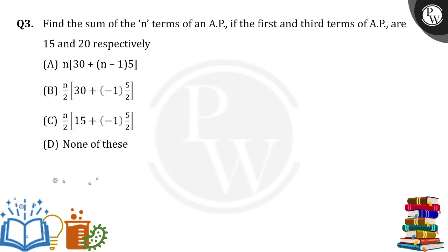Everyone, find the sum of the n terms of an AP, if the first and third terms of an AP are 15 and 20 respectively.